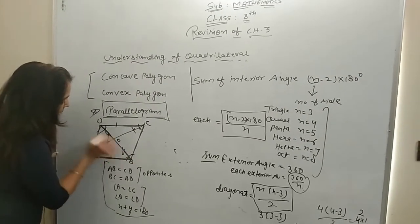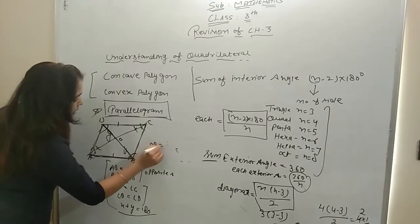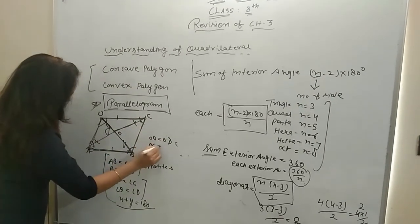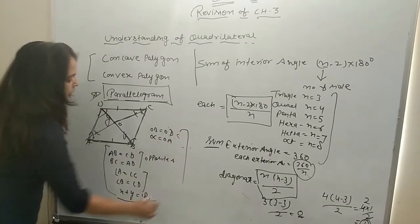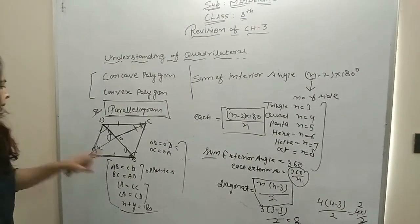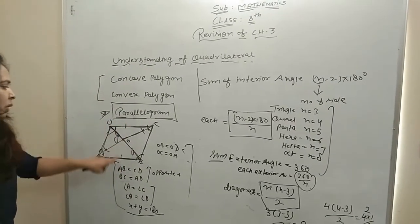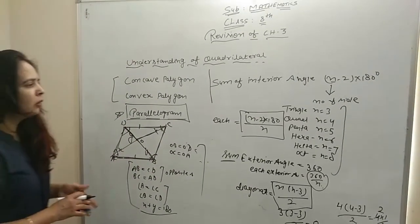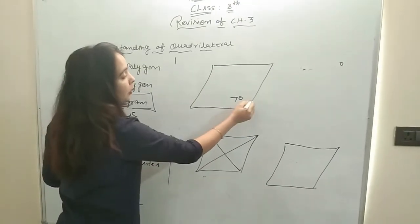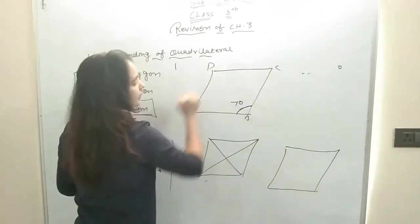The diagonals bisect each other — bisect means OB equals OD, and OC equals OA. There are many questions on parallelogram based on this. Many questions will give you some sides, and you have to find the value of X. One type of question in parallelogram: if one angle is given, you can easily find all the angles.